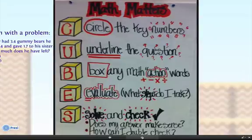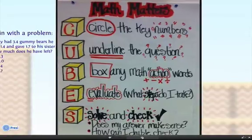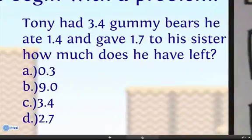Circle the key numbers, underline the question, box any math action words, evaluate, ask yourself what steps do I take, and then solve and check. Does your answer make sense, and how can I double check?